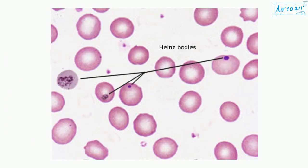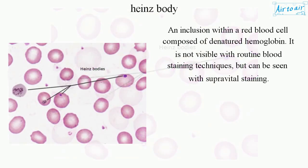Heinz Body: An inclusion within a red blood cell composed of denatured hemoglobin. It is not visible with routine blood staining techniques but can be seen with supravital staining.